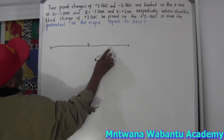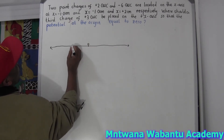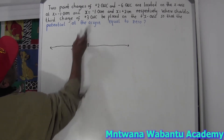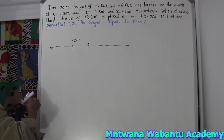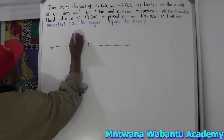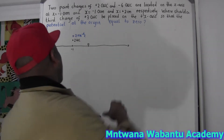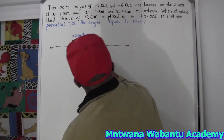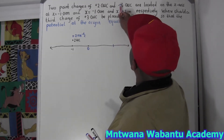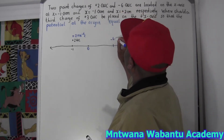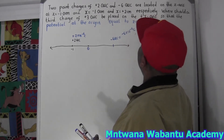Let's say this is zero on the x-axis. The first charge is located at negative one, so the first charge is positive two micro coulomb, which is the same as two times ten to the negative six coulombs. The second charge is at position two, which is negative six micro coulomb, equal to negative six times ten to the negative six coulombs.